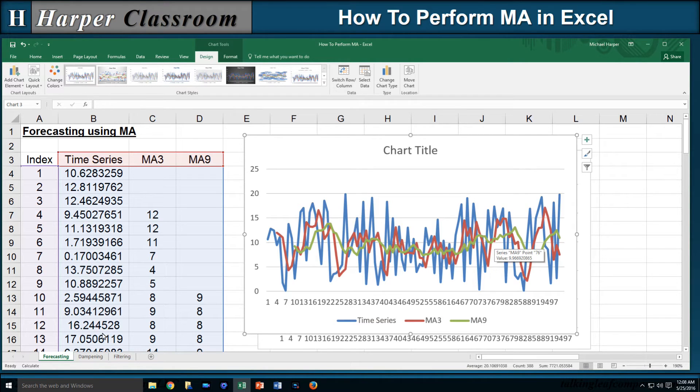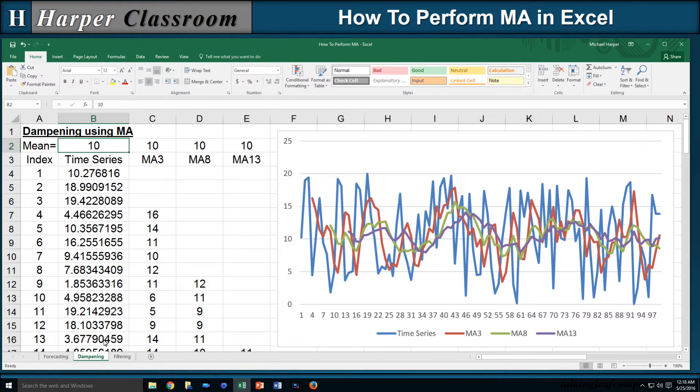So let's go to the Dampening tab. For dampening using moving average, I have a random time series already generated. I also generated the moving average with a window of 3, 8, and 13.